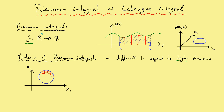The second problem of the Riemann integral is that we need some continuity property for the functions we want to integrate — we have some dependence on continuity. In the best case the function should be continuous, then we don't have any problems. However, if we have discontinuity points, there should be only finitely many of them. If we have infinitely many, it can destroy the integrability of the function. The dependence on continuity is indeed a disadvantage of the Riemann integral.